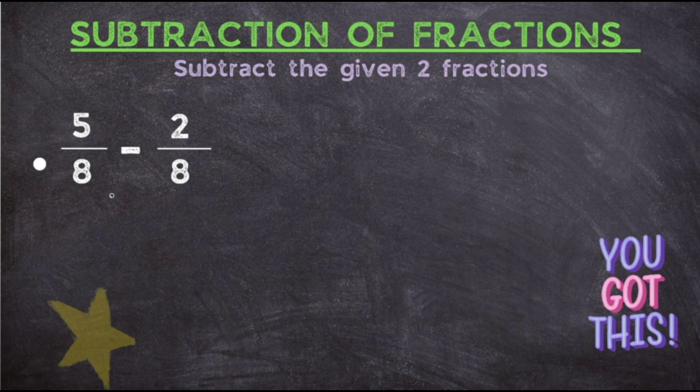First, let's focus on the question where you have the denominator as the same number. So here the first question is 5 upon 8 minus 2 upon 8. When the denominators are the same, directly go and add or subtract the numerator. So here we have to do the subtraction, so directly go and do the subtraction: 5 minus 2 upon 8. 5 minus 2 gives you 3 upon 8.